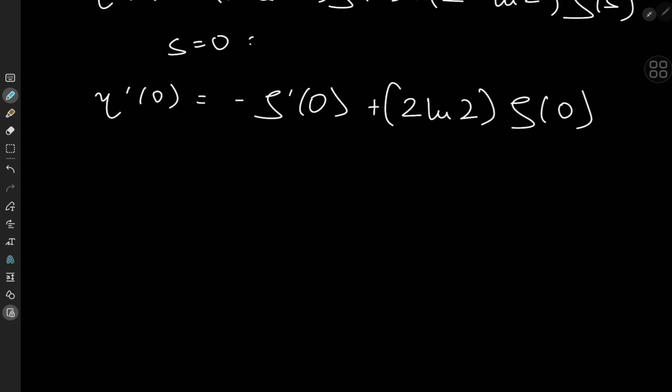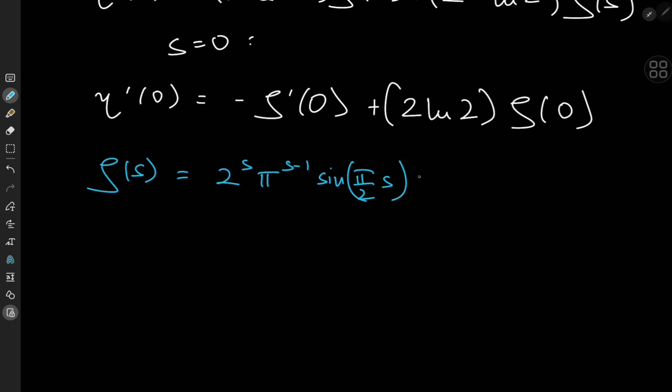So what exactly is ζ(0)? That's an interesting exercise making use of the zeta function's functional equation, the gamma function, and residues. The zeta function is given by an infinite series for Re(s) > 1, has a simple pole at s = 1, and for the rest of the complex plane satisfies: ζ(s) = 2^s · π^(s−1) · sin(πs/2) · Γ(1−s) · ζ(1−s).